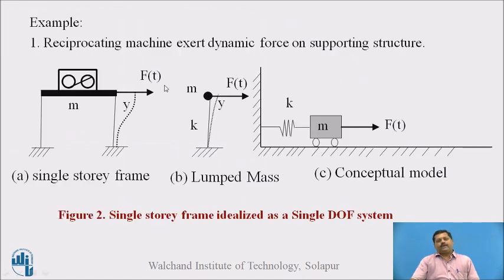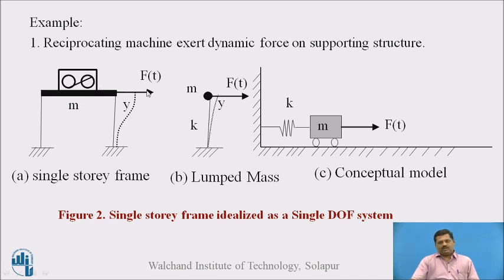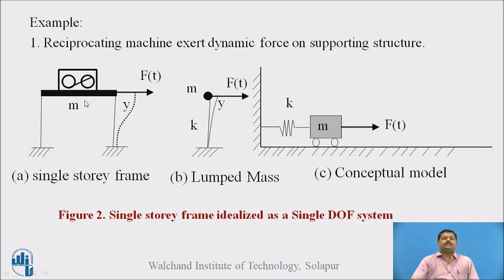The example used to explain undamped forced vibration is a reciprocating machine that exerts a dynamic force on a supporting structure. This frame is the supporting structure, and this is the reciprocating machine. When it starts, it exerts some motion, and due to that motion, a time-dependent force is exerted on the structure, causing vibration. M is the mass of this story which is lumped at floor level — this is the first assumption.